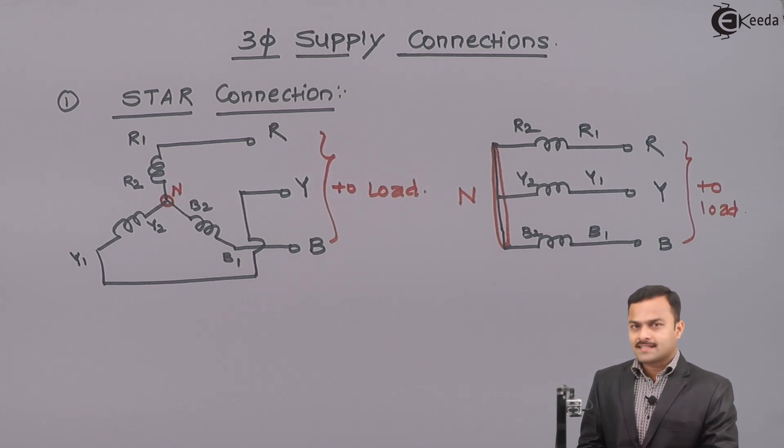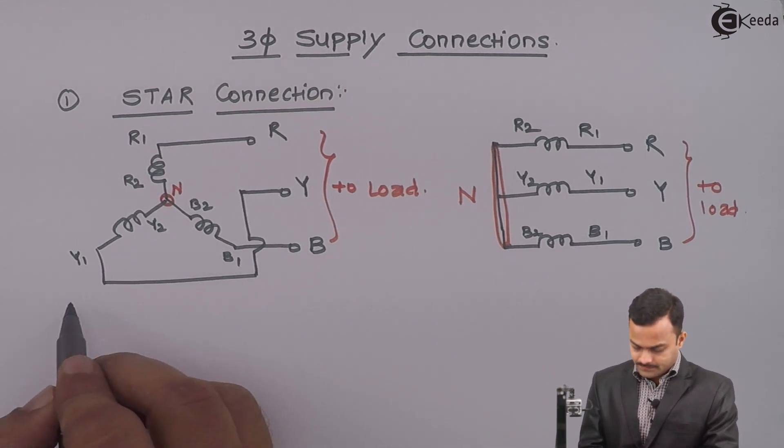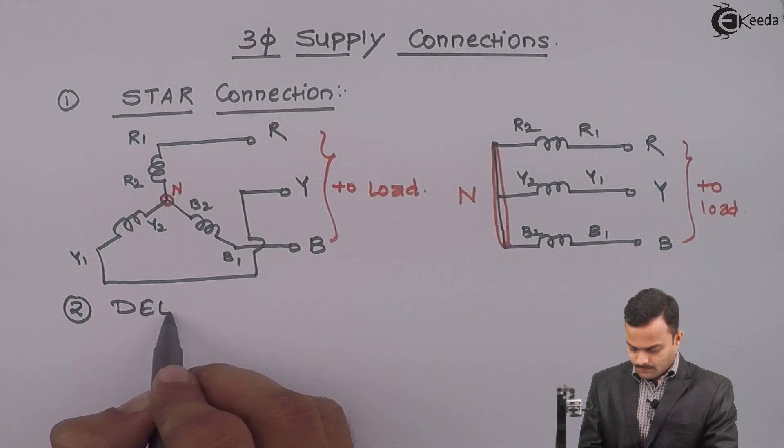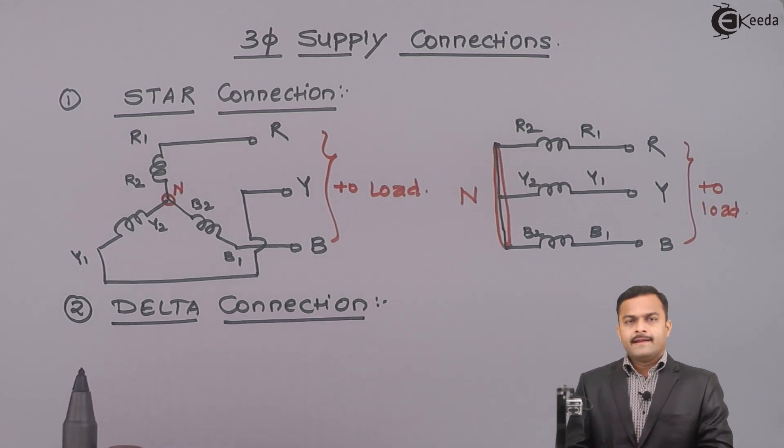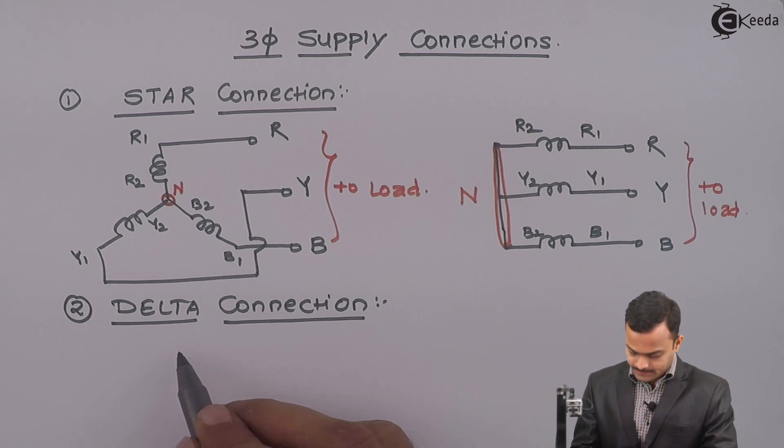Let's study delta connection. In delta connection, three windings are connected such a way that they will form a loop. Just check how the delta will look like.